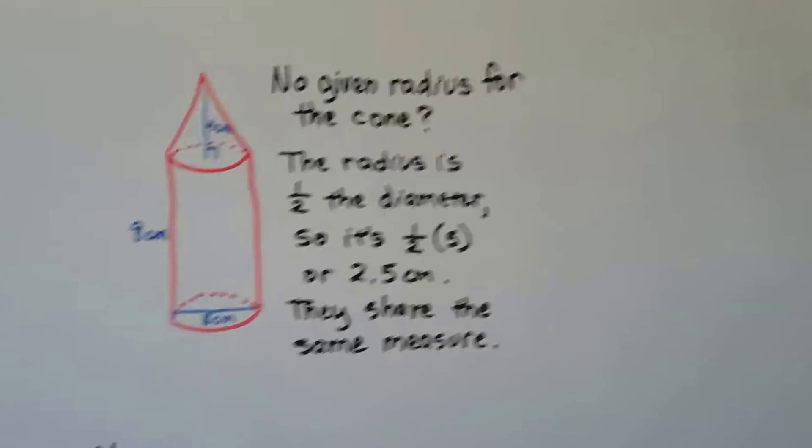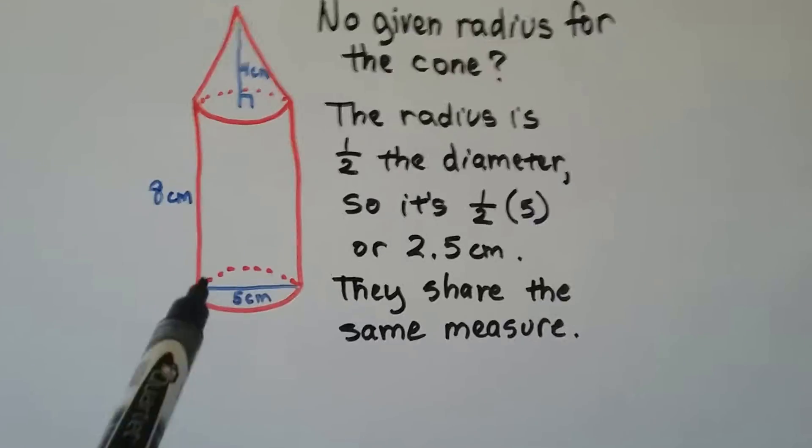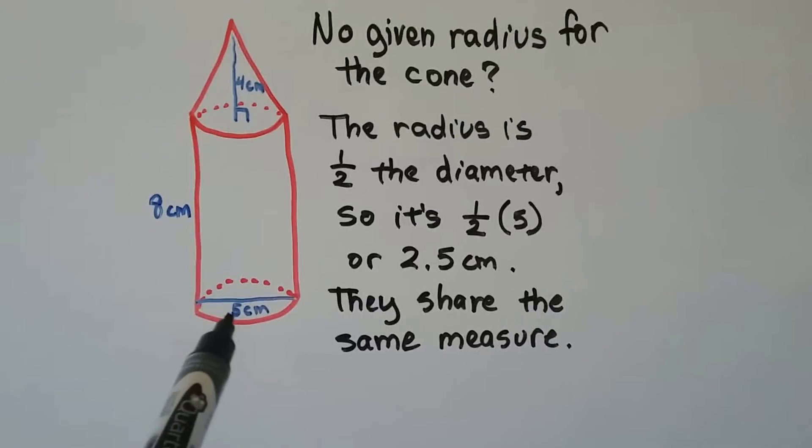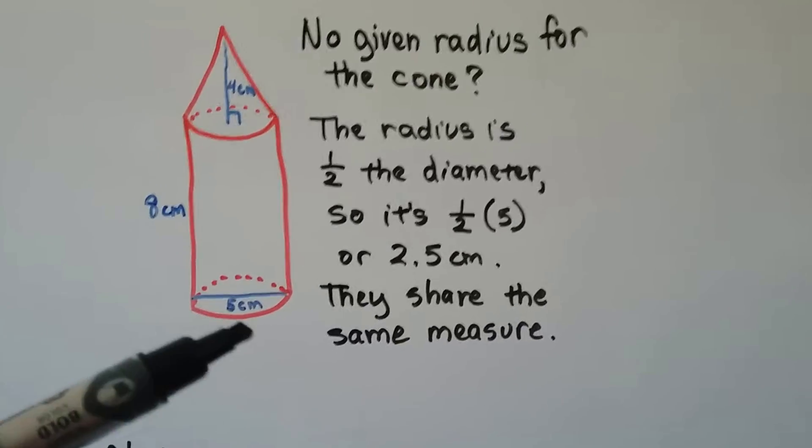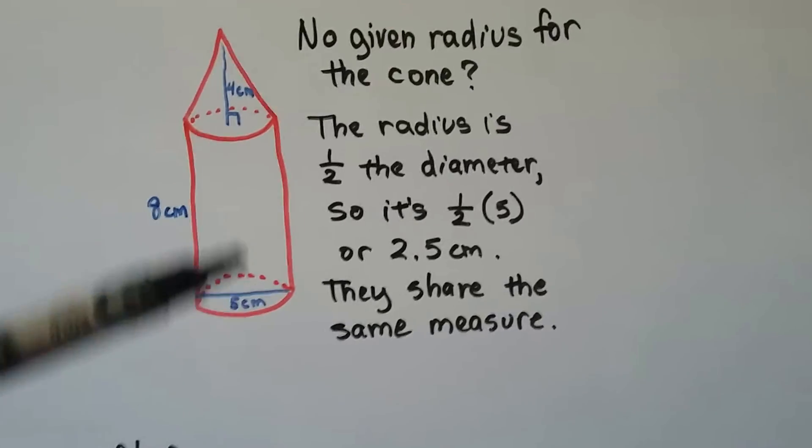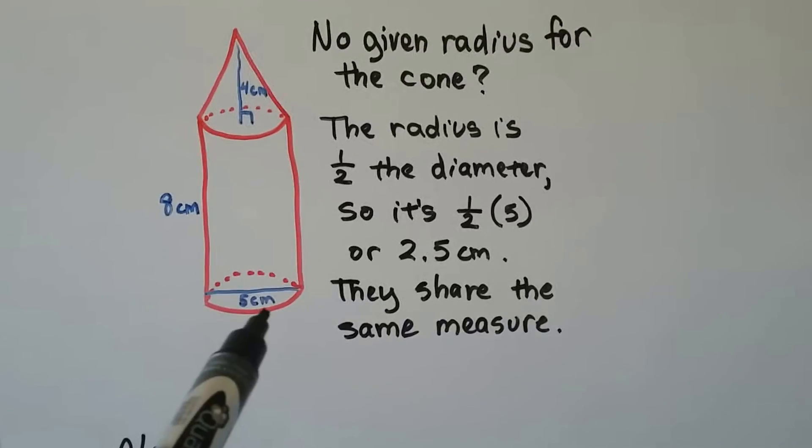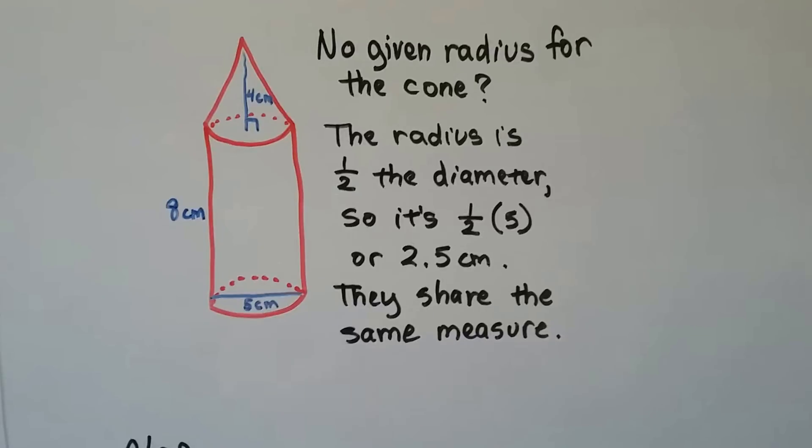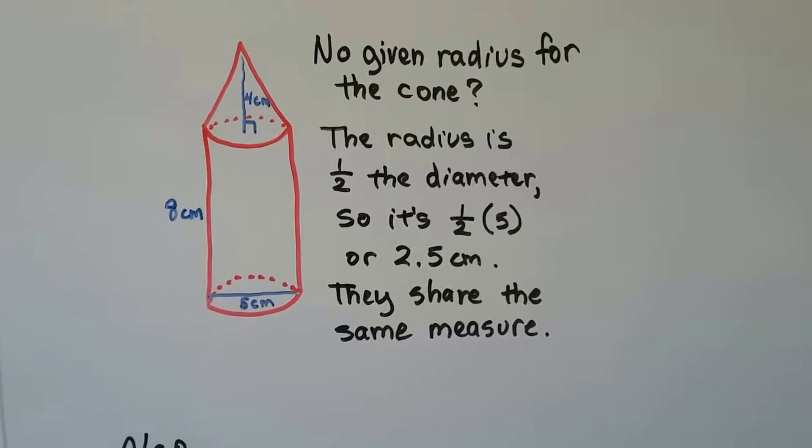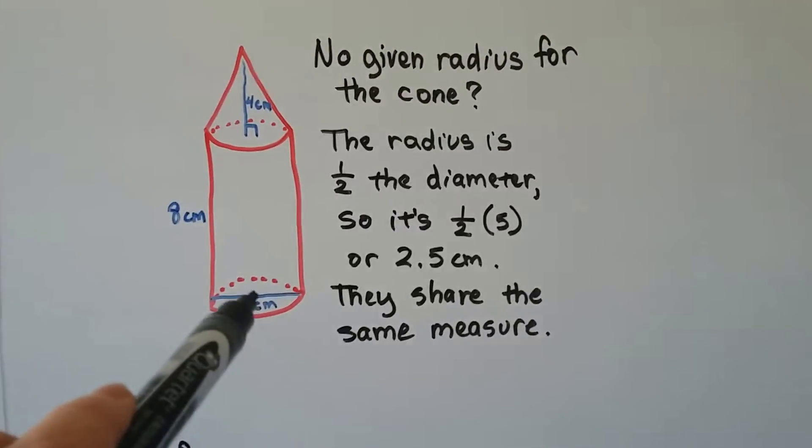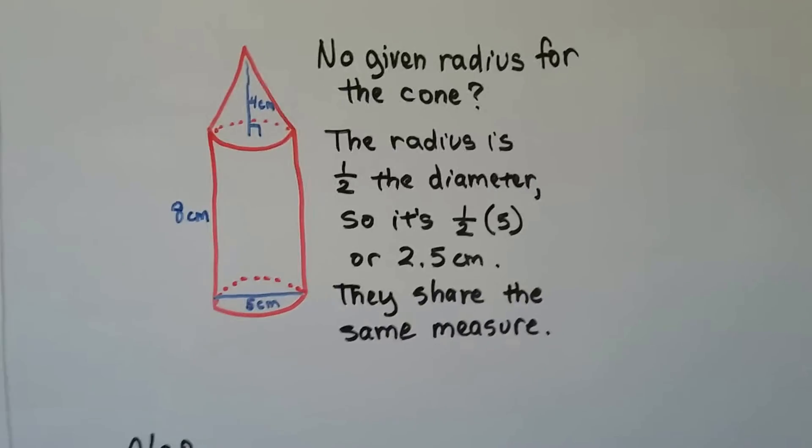For this drawing, there's no given radius for the cone, but we see a diameter down here at the bottom of the cylinder. Well, we know that the radius is half the diameter, and they share that diameter. So, the radius is going to be 2.5. So you'd be able to find the volume for that cone by using half of that one's diameter.